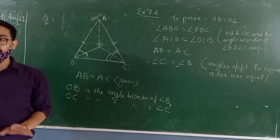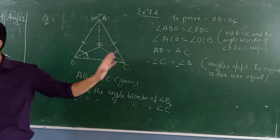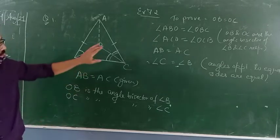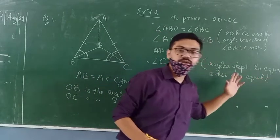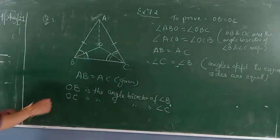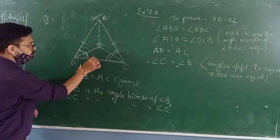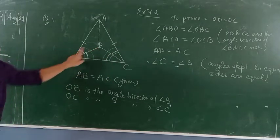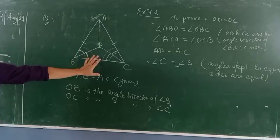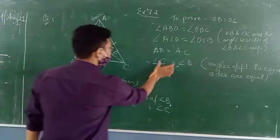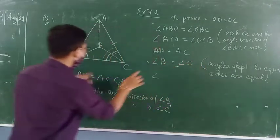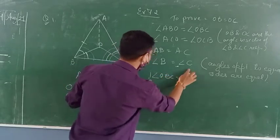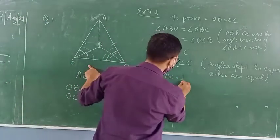So from this you can say angle B equals angle C, and the reason is angles opposite to equal sides are also equal. That means if this complete angle is 2θ, then this angle is also equal to 2θ. Angle B equals angle C, so OBC and OCB are each equal to half of that.